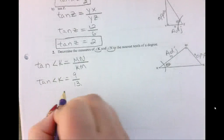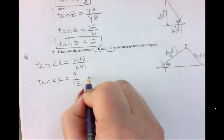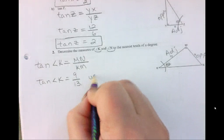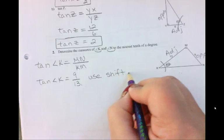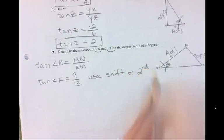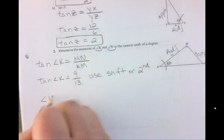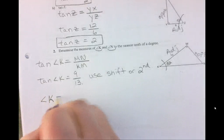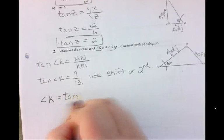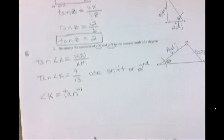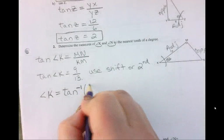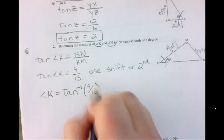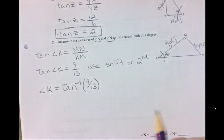And now we have to somehow get this angle k all by itself. So what we're going to do is we're going to use our shift button on our calculator. So use our shift or the second button on your calculator. And we have to get it to look like this. So we have angle k equals tan. And now this negative 1 means inverse function. And then we've got 9 over 13.